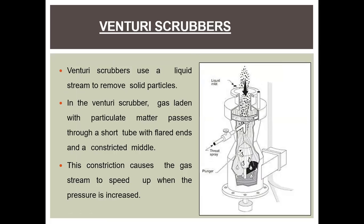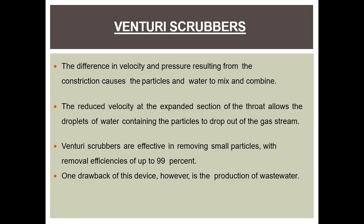Next are venturi scrubbers. Venturi scrubbers use a liquid stream to remove solid particles. In this scrubber, gas laden with particulate matter passes through a short tube with flared ends and a constricted middle. This constriction causes the gas stream to speed up when pressure is increased. The difference in velocity and pressure resulting from the constriction causes particles and water to mix and combine. The reduced velocity at the exit section of the throat allows water droplets containing particles to drop out of the gas stream. These scrubbers are very effective in removing small particles, with removal efficiency of up to 99 percent.